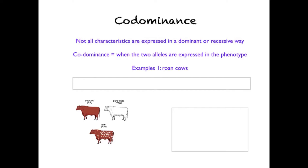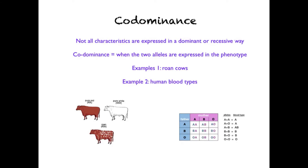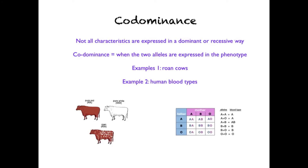A second example in humans is blood type. Looking at this picture, we can see there are a number of different blood types: A, AB, B, or O. An individual could have one of three different alleles to pass on to their offspring, and we can see here the allele combinations and the blood types that result.